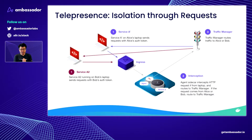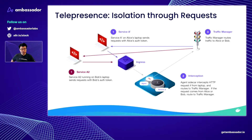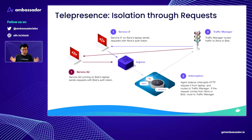This is how we actually get isolation. A prime is in purple, and those purple requests hit the sidecar agent, which gets routed to the traffic manager. Service A2, which belongs to Bob — while Alice is working on service A prime — has a different authentication token, so Bob's requests also get intercepted by the smart agent and routed to the traffic manager. The traffic manager sends Bob's requests to Bob's laptop, Alice's requests to Alice's laptop, and everyone else's requests get routed to service A. You can scale this and have an unlimited number of developers because each developer just gets their own authentication token.